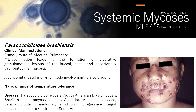Next is Paracoccidioides brasiliensis. For clinical manifestations, as with all systemic mycoses, the mode of transmission is inhalation, so the primary infection site is the lungs. Dissemination leads to the formation of ulcerative granulomatous lesions of the vocal, nasal, and occasionally intestinal mucosa.